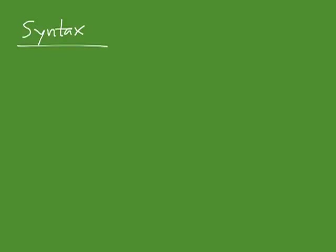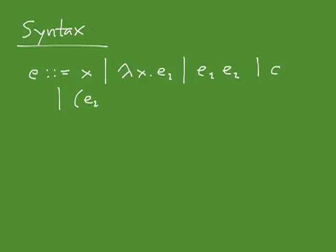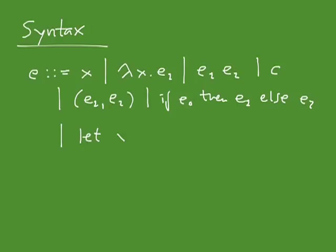Let's look at the syntax of the simply typed lambda calculus. Lambda expressions consist of variables, abstractions, and application — all as before. Then we have some separate constructs: numerals, pairs of expressions, and conditionals — if, then, else. We also have local declarations: let x equal e1 in e2. That's all you have expression-wise.